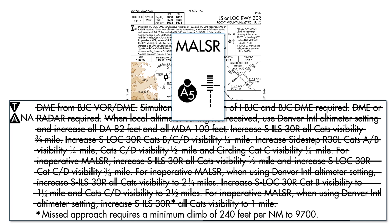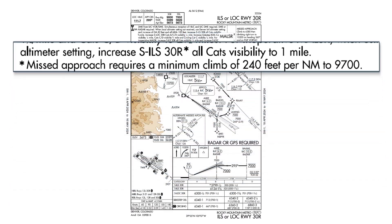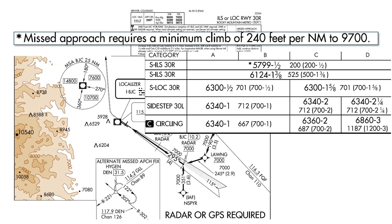With those out of the way, we get into the last note with the asterisk. It shows that to use the minimums for the ILS that have the asterisk, we need to be able to maintain a climb gradient of at least 240 feet per nautical mile. Contrast this with the standard minimum climb of 200 feet per nautical mile. If we can do the higher climb angle, we're allowed to go down to the lower decision altitude of 5,799.